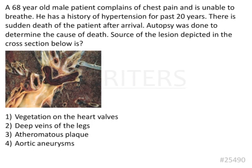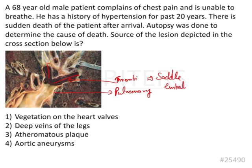The question asks for the source of the lesion depicted in the cross section. In the cross section, we can see thrombi stuck at the bifurcation of the pulmonary artery. This is going to be a case of pulmonary emboli, and specifically this is a case of saddle embolism.